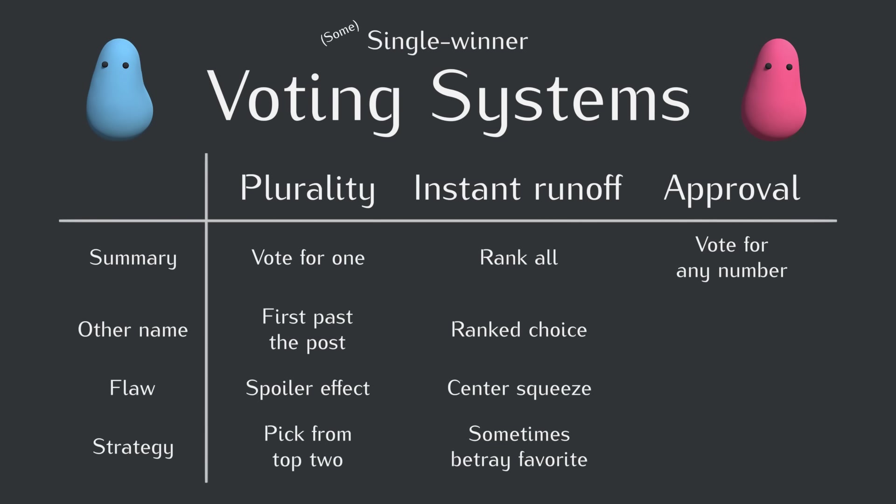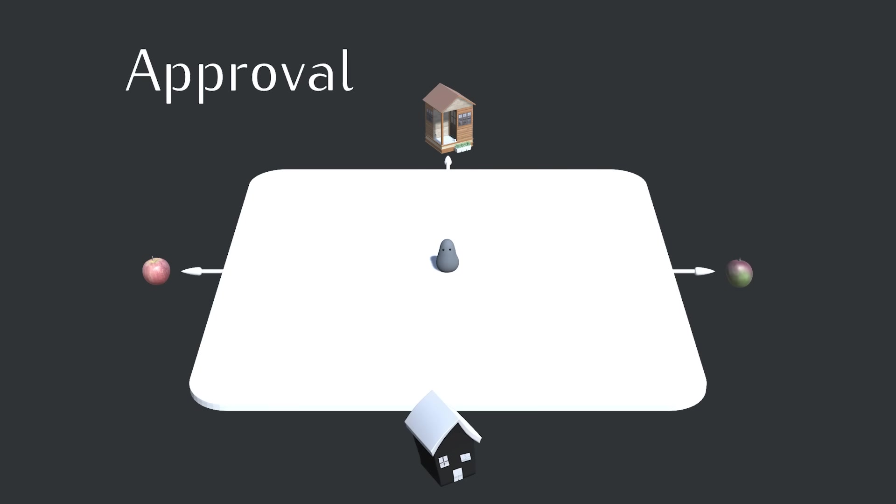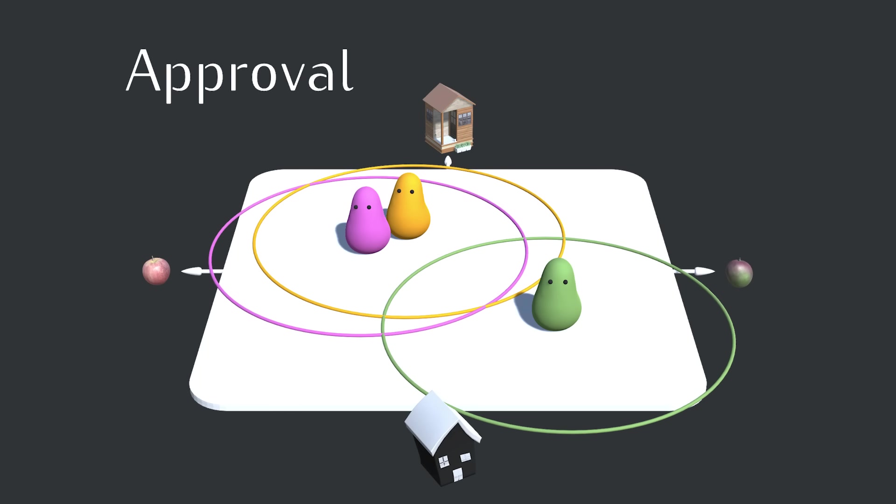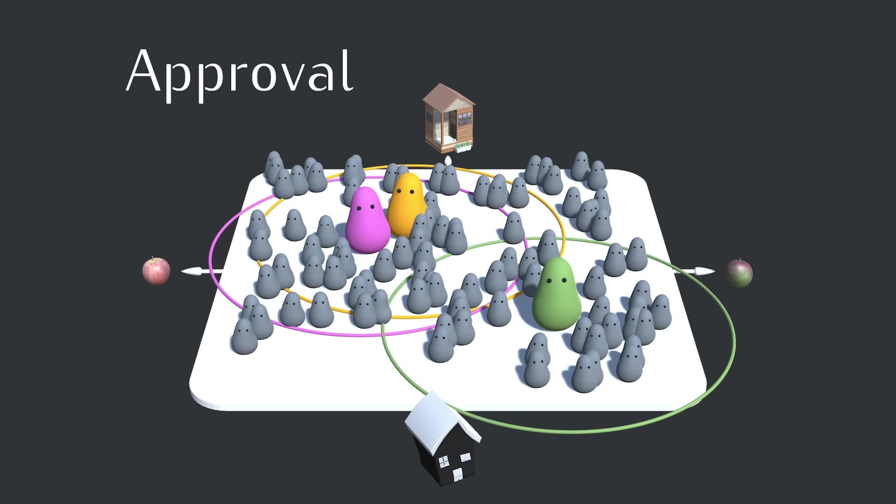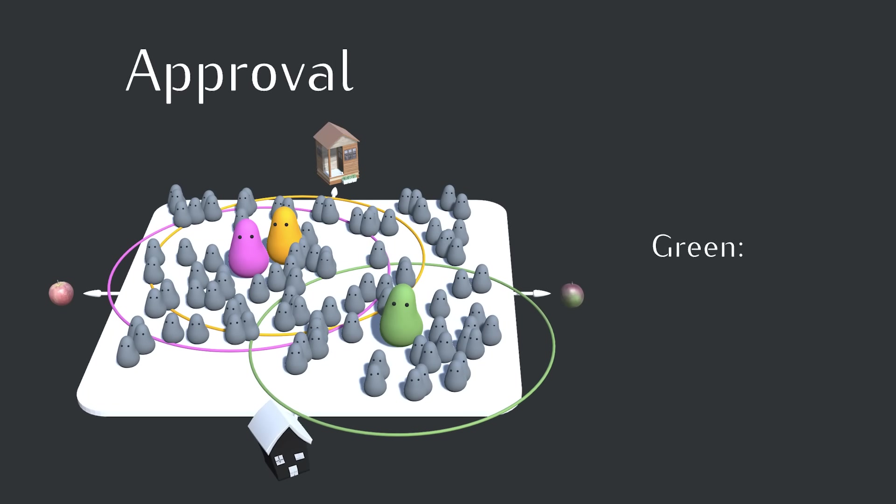All right, the final system we're going to talk about is approval voting. Compared to instant runoff voting, approval is pretty simple. Instead of just voting for one candidate, you can vote for as many as you like. For this method, we need to define an approval range. It'll be this big. If a candidate is within this distance of a voter, the voter will approve of that candidate. Otherwise, it won't approve. And it'll be easier to visualize if we draw the circles around the candidates. So let's do that. Now all the voters within these candidate circles will vote for that candidate. Okay, with that in place, once again, we'll try it first with just orange and green.